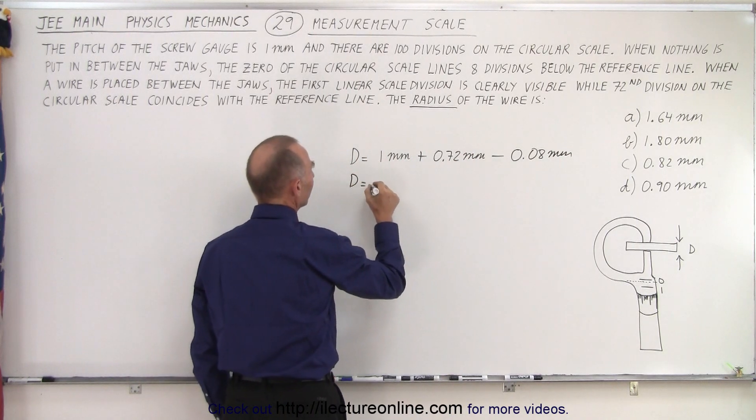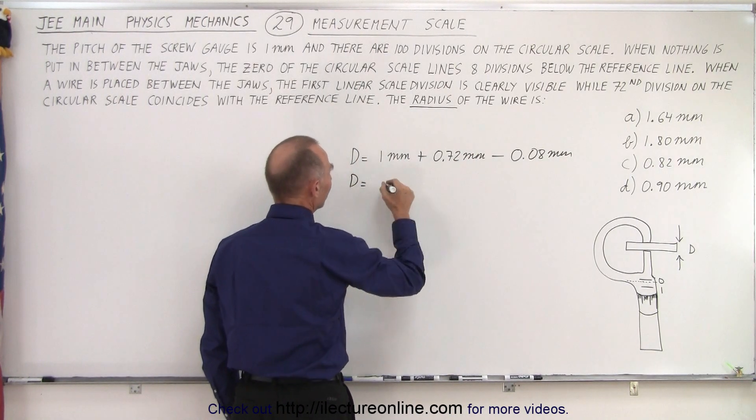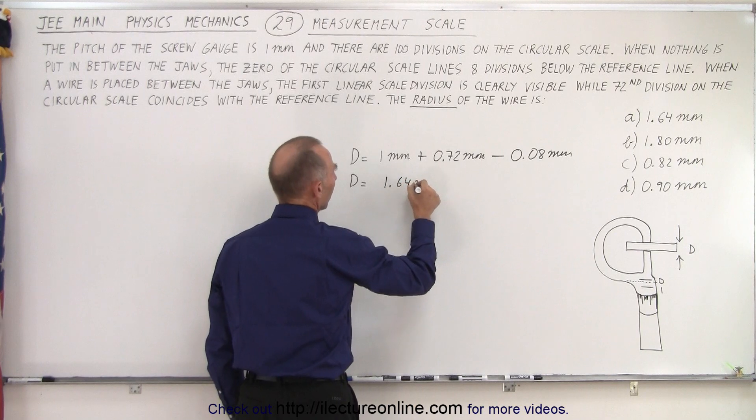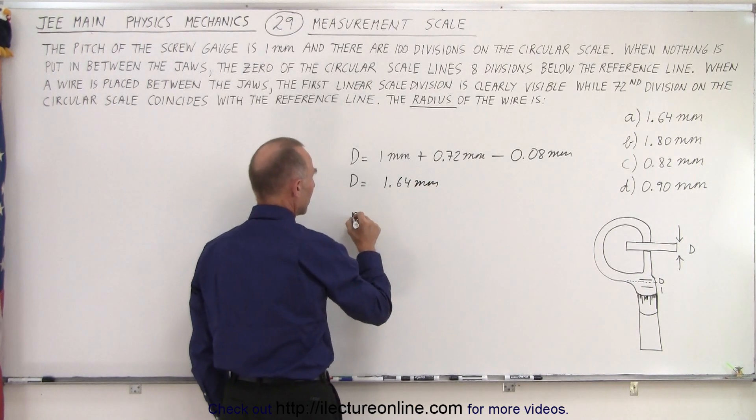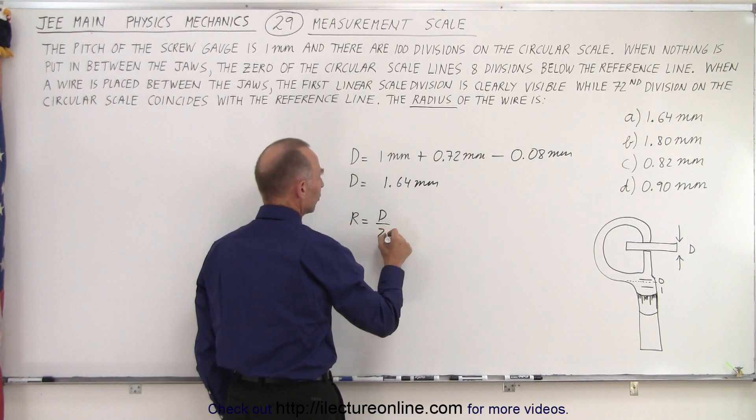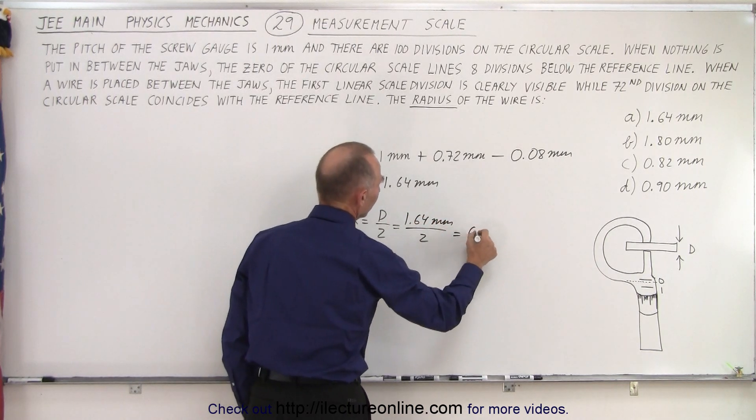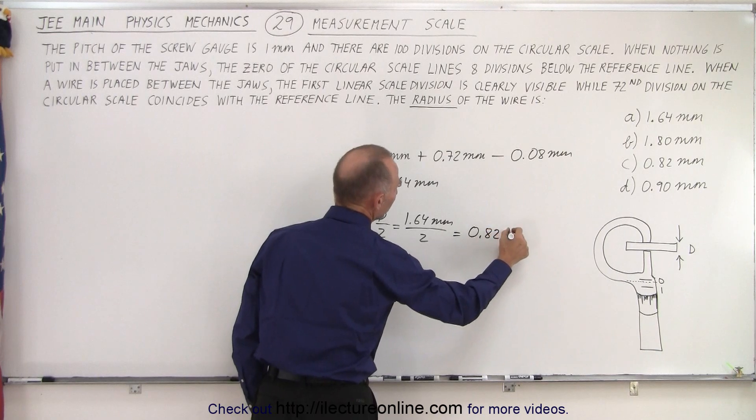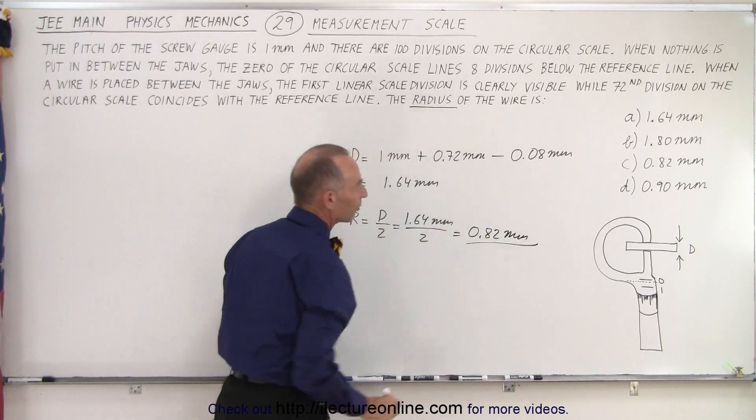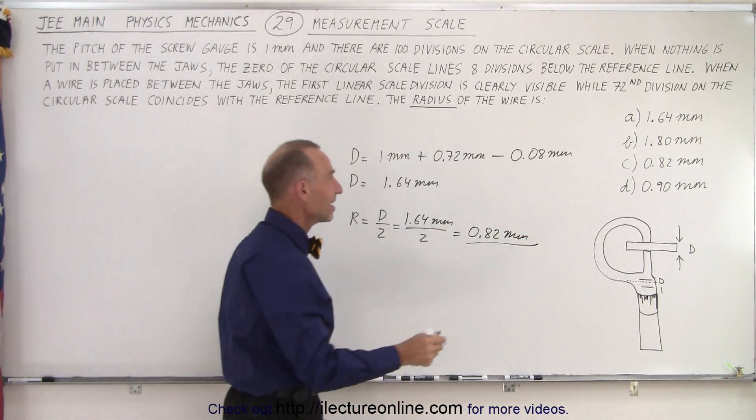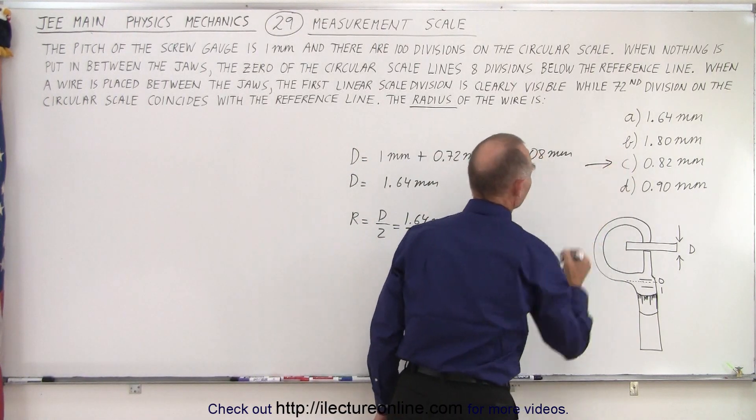And so that means the diameter is equal to one point six four millimeters. And since the radius is equal to diameter divided by two, that's one point six four millimeters divided by two, which is equal to zero point eight two millimeters. And when we look at the possible answers, you can see that C matches that result.